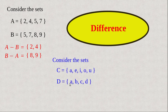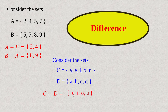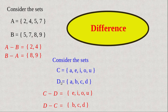Take another example: C = {z, a, e, i, o, u} and D = {z, a, b, c, d}. Then C minus D = {e, i, o, u}, and D minus C = {b, c, d}. B, C, and D are in D but not in C.